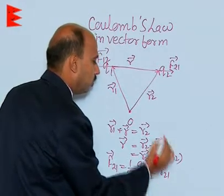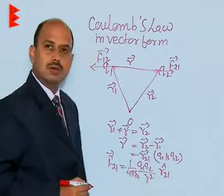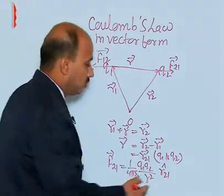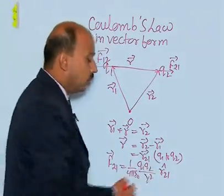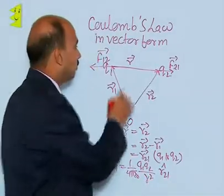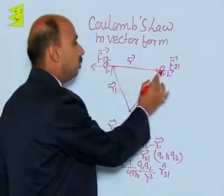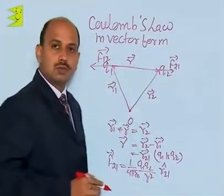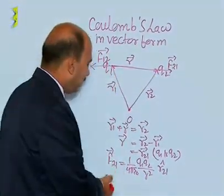So F21 vector — R21 direction is from Q1 to Q2.